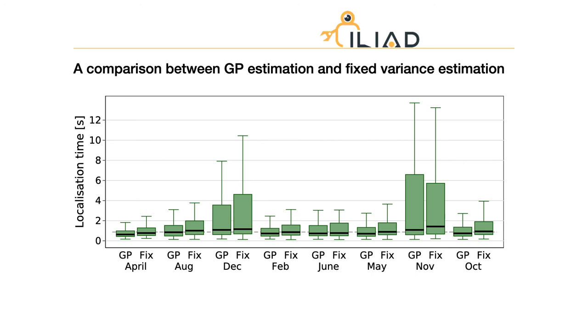We also compared to initialize the particles using Gaussian process estimation with a fixed variance estimation. We can find a significant improvement in terms of localization efficiency is achieved when we use Gaussian process to initialize the particles.